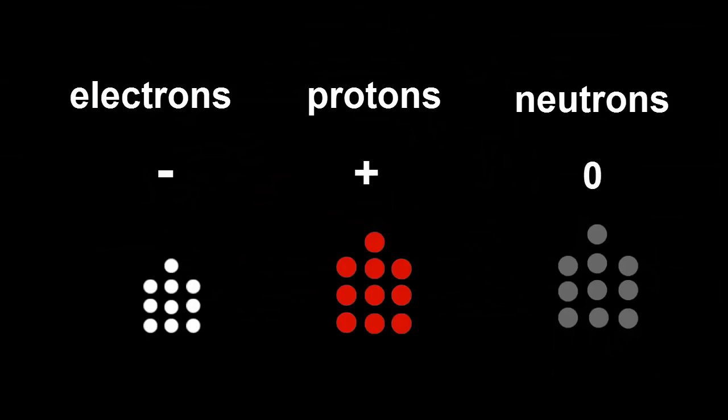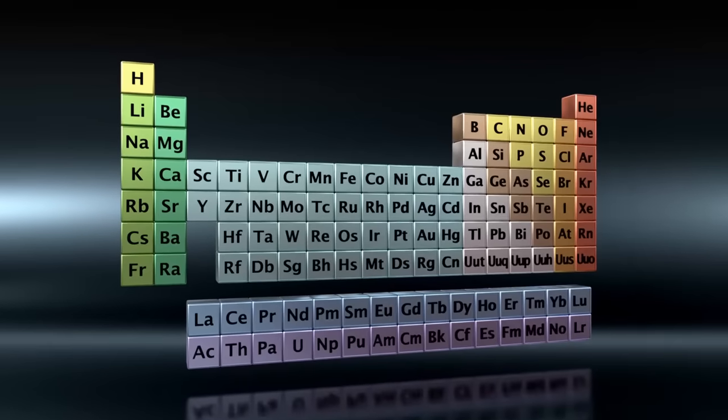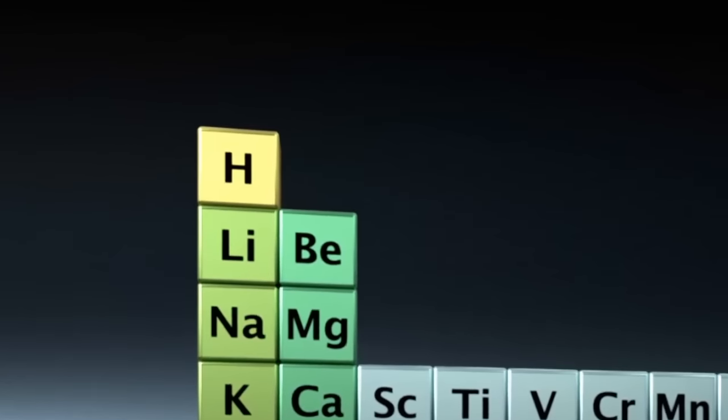Let's pretend we have a pile of each of these particles and then build some atoms from scratch. What's the simplest and lightest atom you can think of? It must be the one with an atomic number of one.